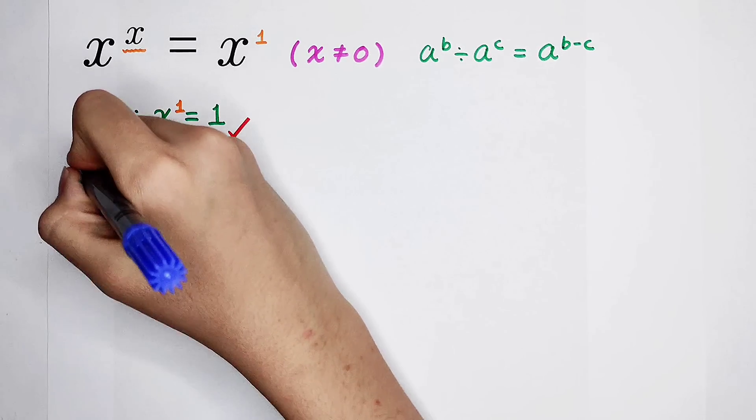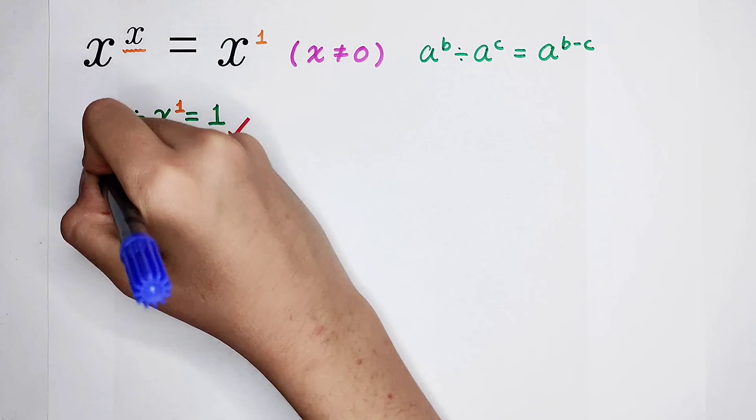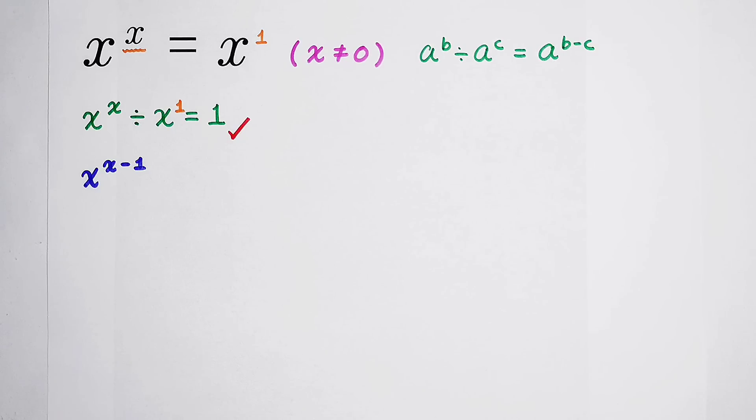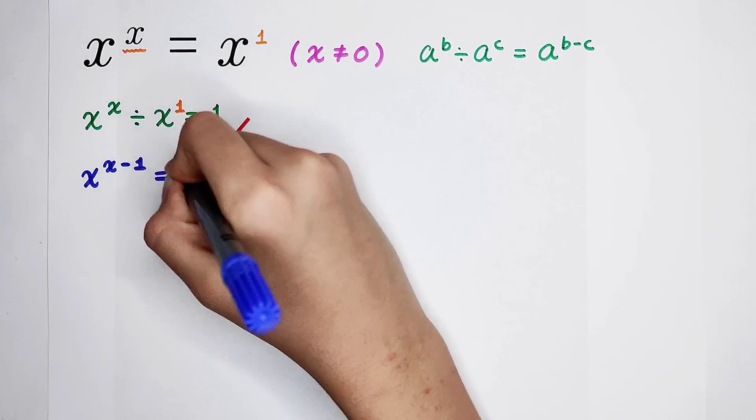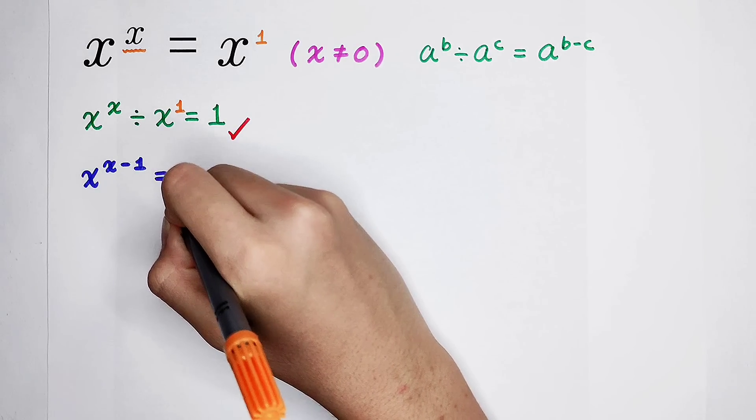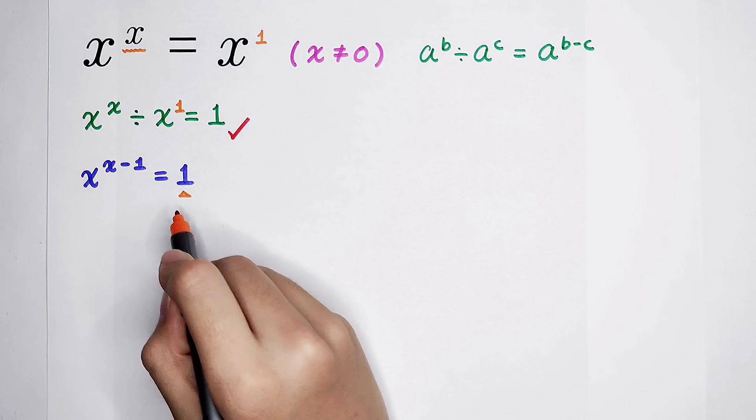And then, the left hand side can become x to the power of x minus 1 is equal to 1. Okay, what should we do? More attention should be paid to the right hand side, this 1.